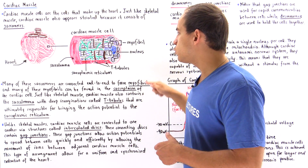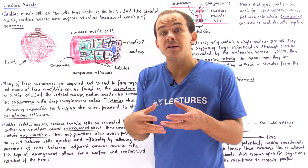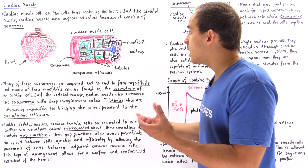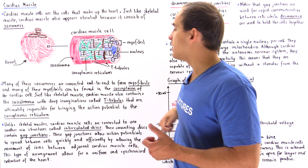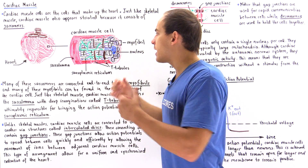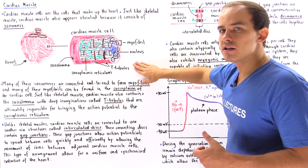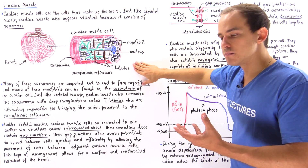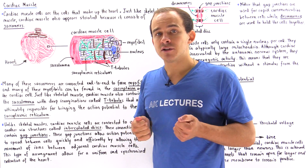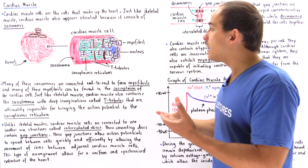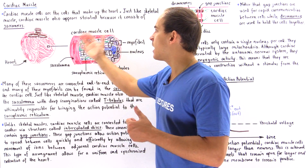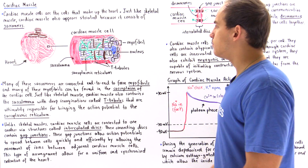The T-tubules are deep invaginations — deep tunnels that begin on the plasma membrane and extend throughout the cell. They are responsible for allowing the action potential to propagate quickly and uniformly throughout the entire cardiac muscle cell.